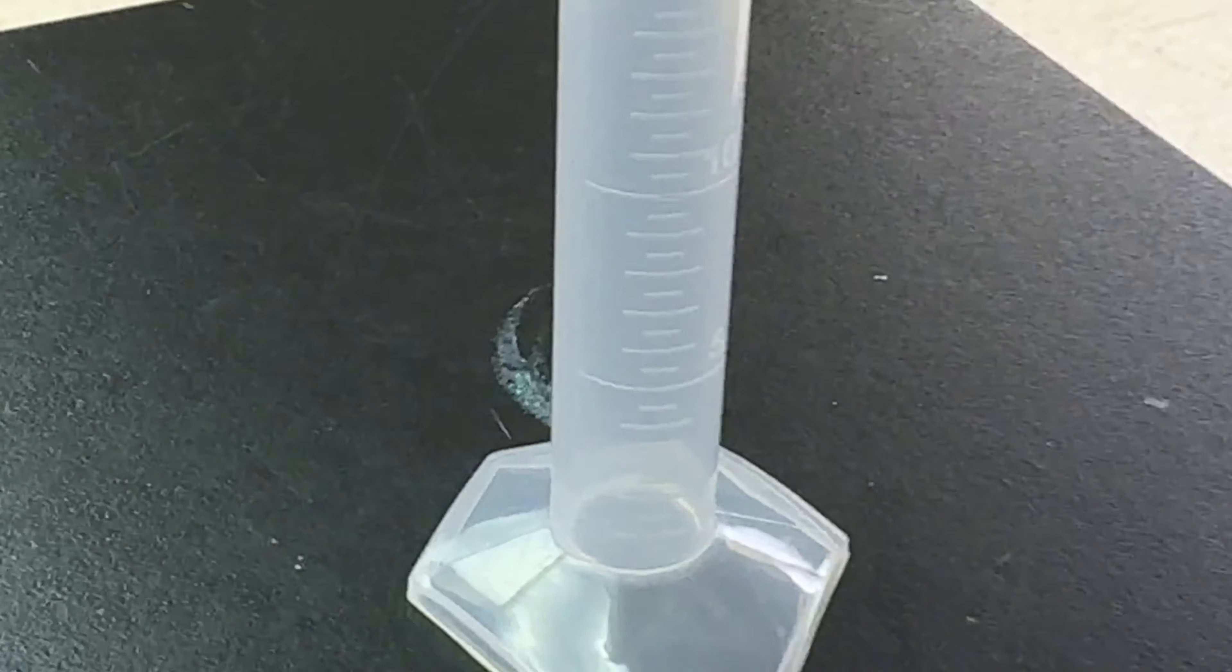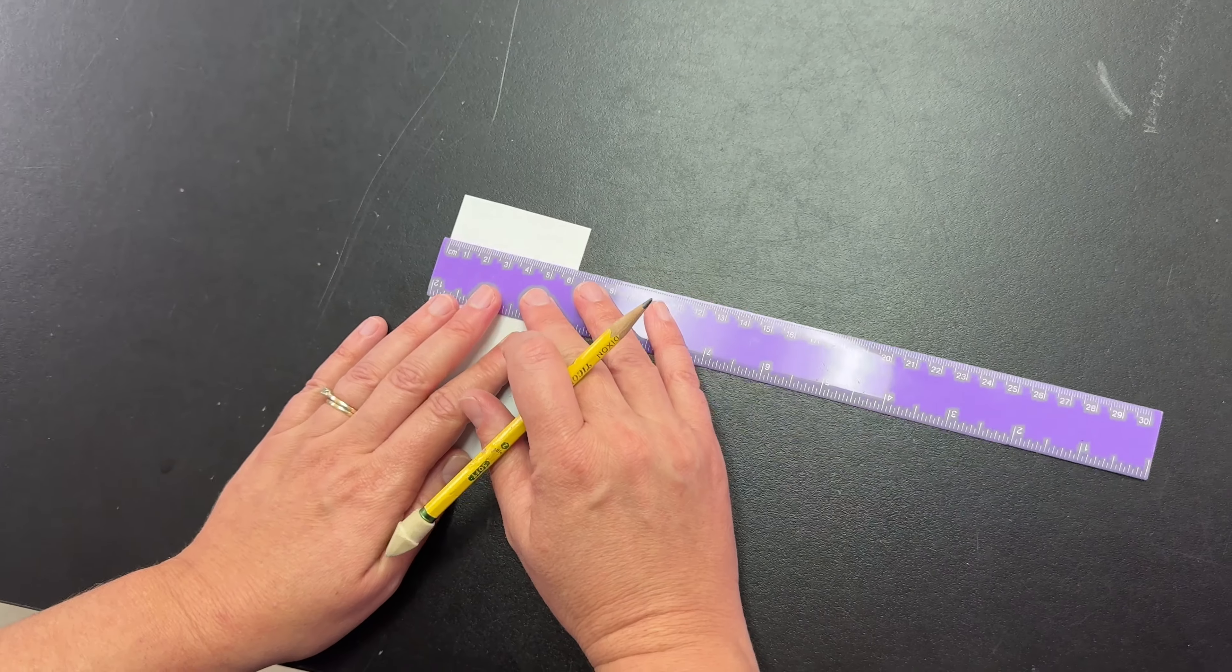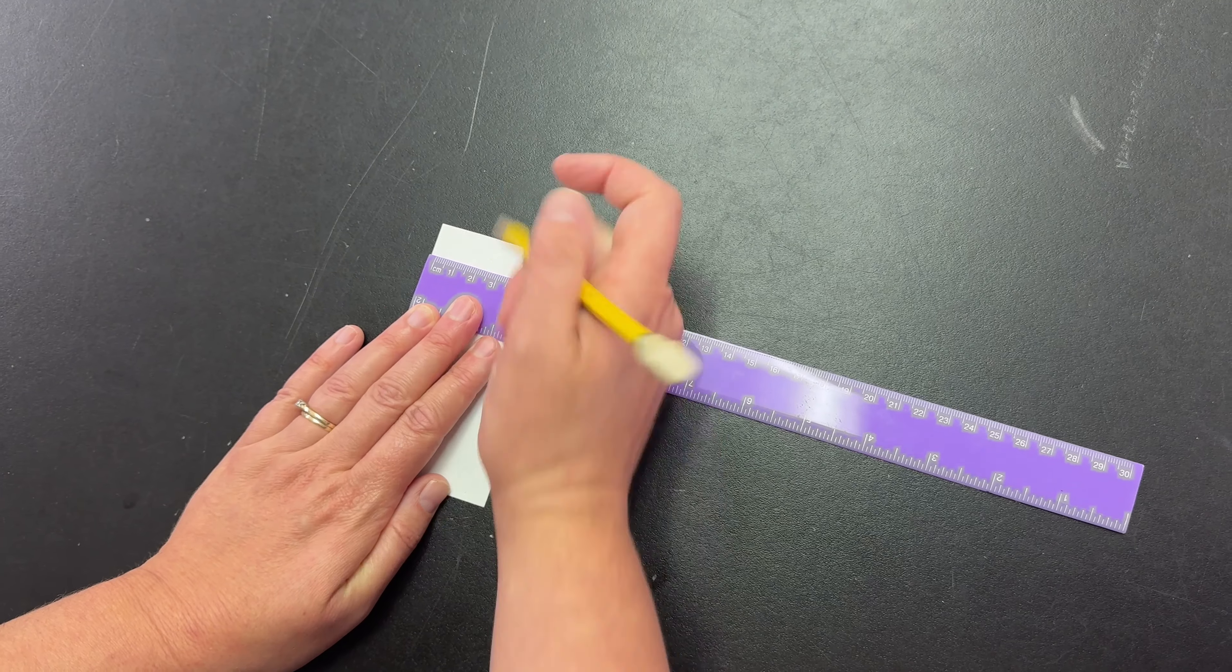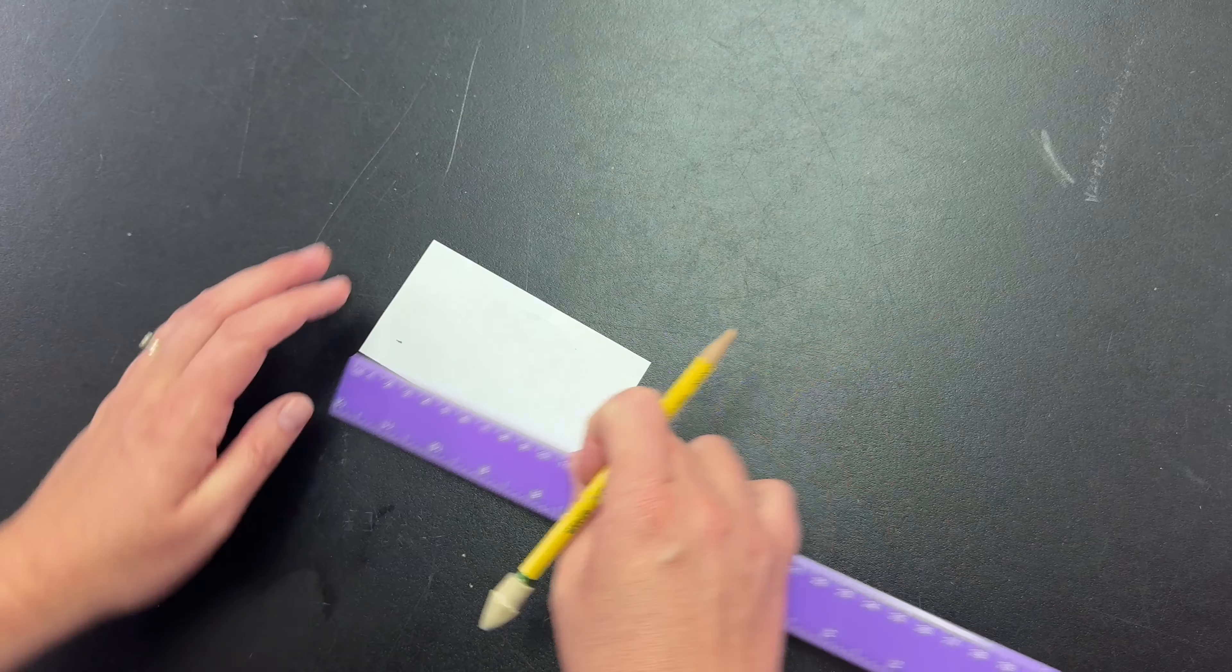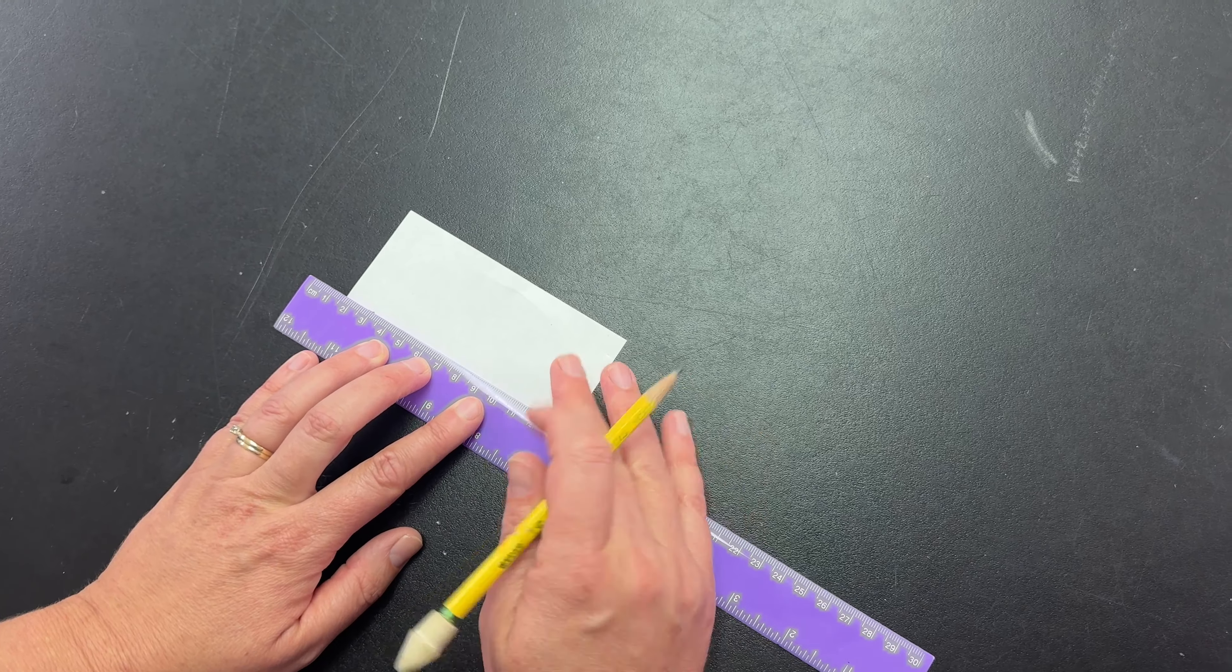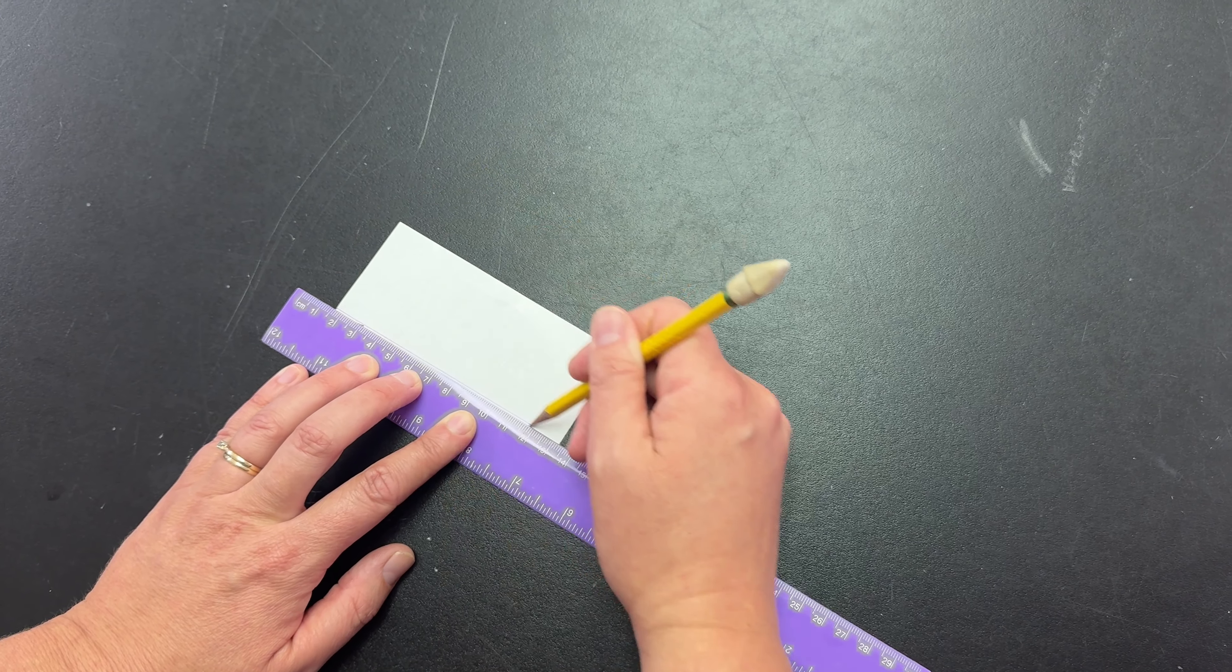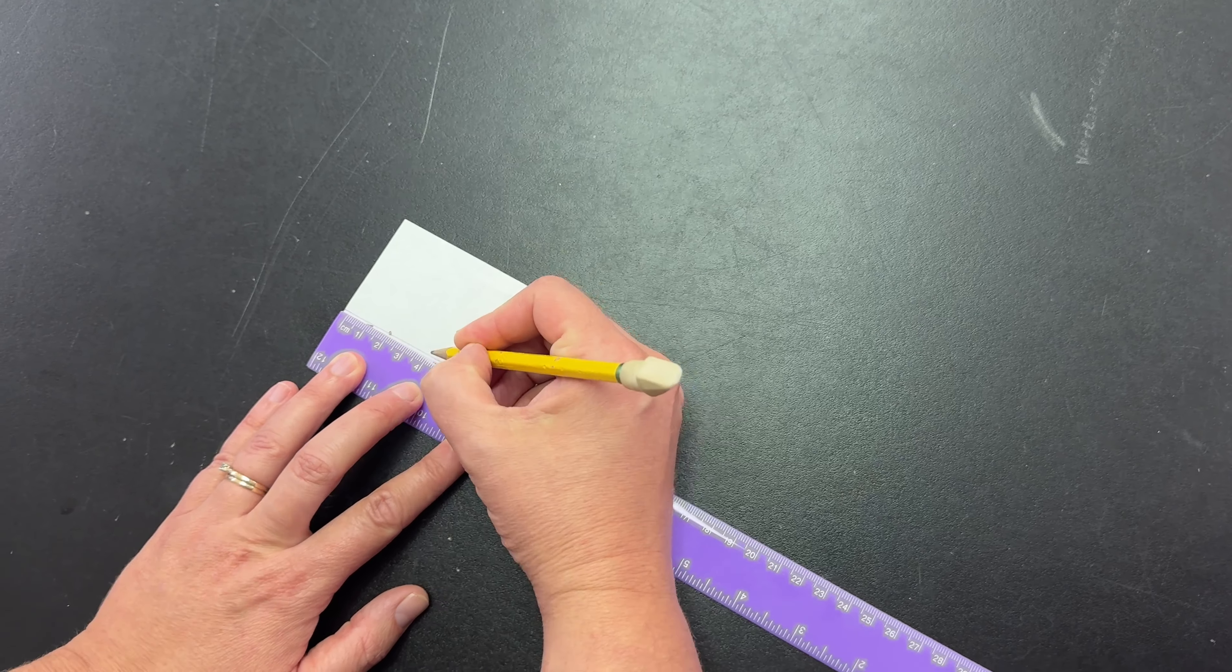Step one: use a pencil to draw a light line one centimeter from the edge of a 10 centimeter by 10 centimeter piece of chromatography paper. The pencil lead is insoluble in water and will not interfere with the experiment. Starting one centimeter from the edge, make marks two centimeters apart along the line.